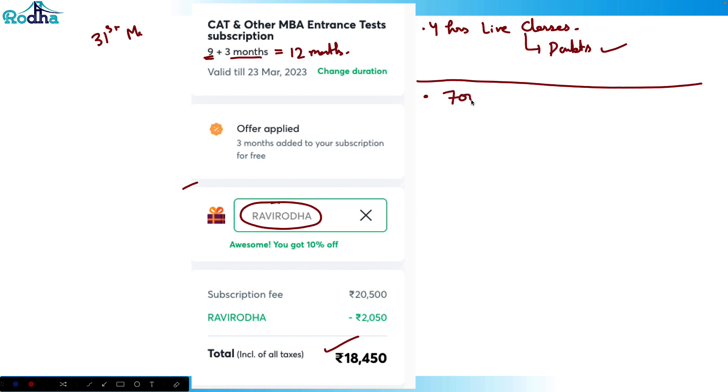If it's about only my course, there are 700 plus LRDI sets of high quality and some 3000 plus quant questions solved by me. Only my course is available at the academy. Apart from this, you get all the mocks - around 20 plus mocks.